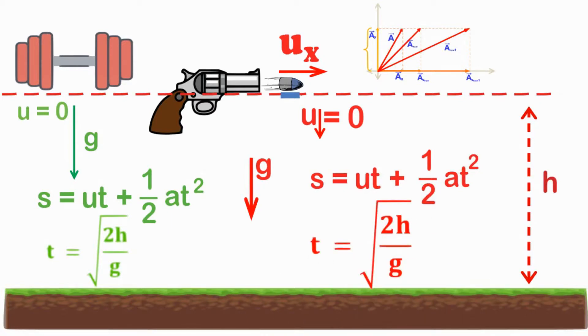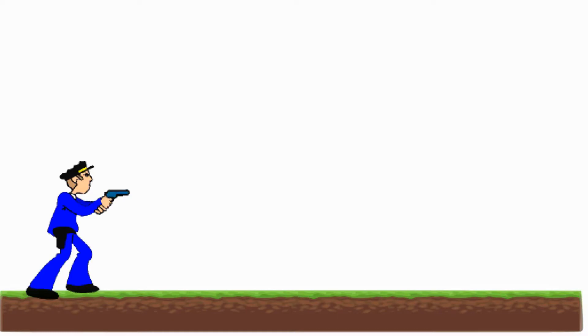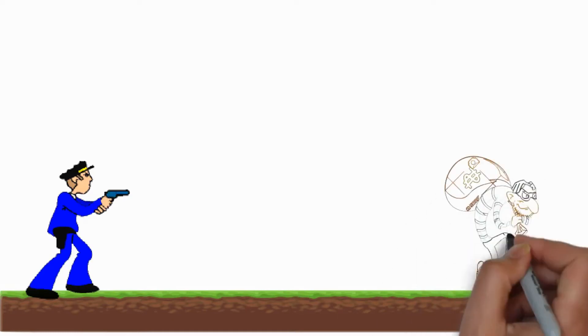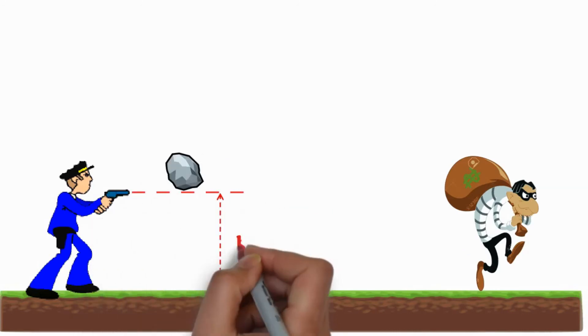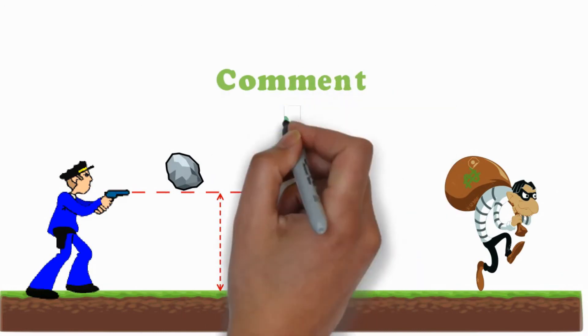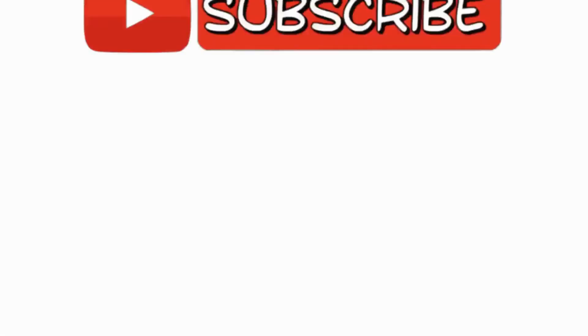Thus, we can say that the time taken by both objects to reach the ground is the same. So next time, if you think of firing a bullet horizontally, you can easily find out the effective time of the bullet by just dropping the object from the same height. If you have any questions, write in the comment section below, and hey, don't forget to subscribe.